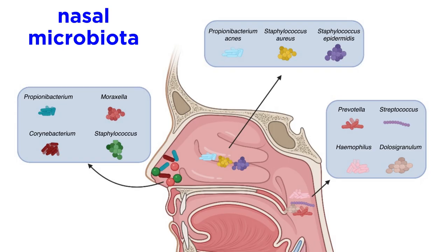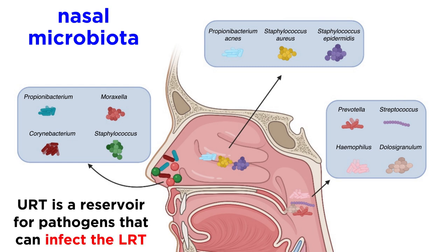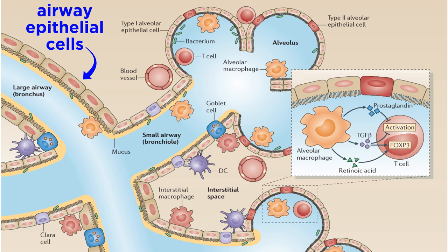The nasal microbiota closely resembles that of the skin, but as we move further into the upper respiratory tract, it begins to diversify and include Moraxella, Dolosigranulum, Haemophilus, and Streptococcus. Although the lungs have their own microbiome, it is understood that the upper respiratory tract is a major initial reservoir of pathogens causing lower respiratory tract infections. This means that the upper respiratory tract microbiome is important for preventing colonization of pathogens that could spread to the lower respiratory tract. Airway epithelial cells express a wide range of pattern recognition receptors and are often the first to sound the alarm when an infection is detected, producing cytokines and chemokines to recruit immune cells to the site of infection.